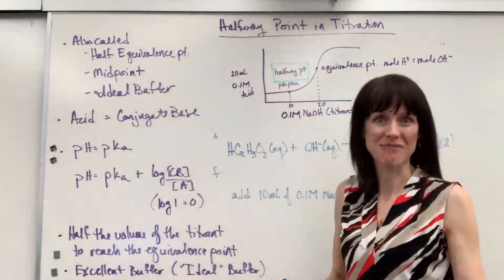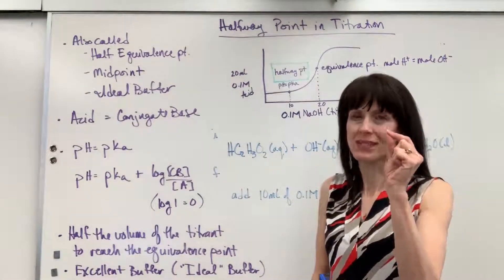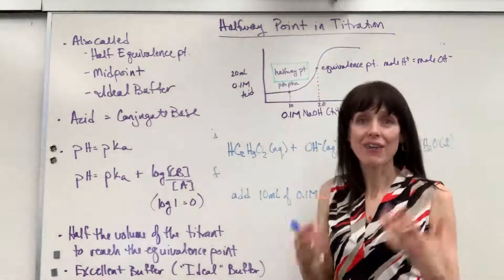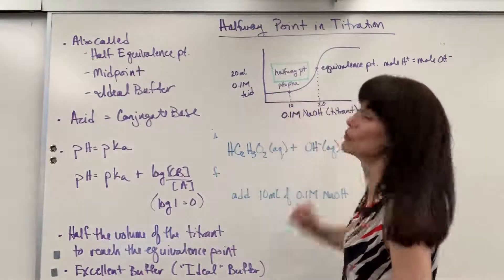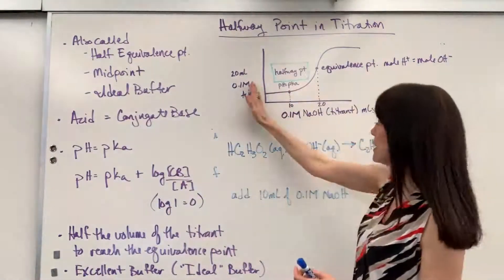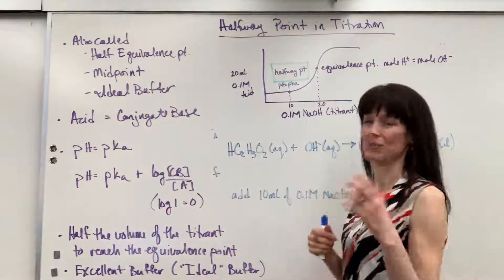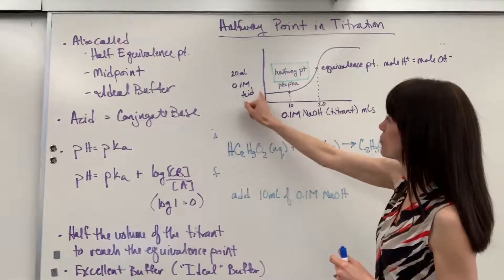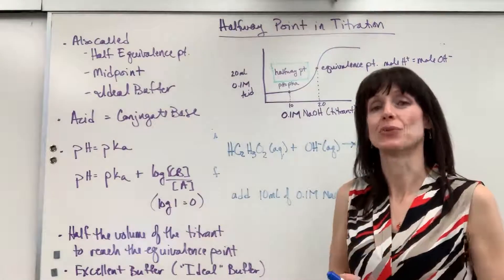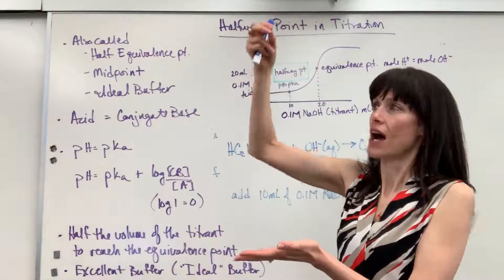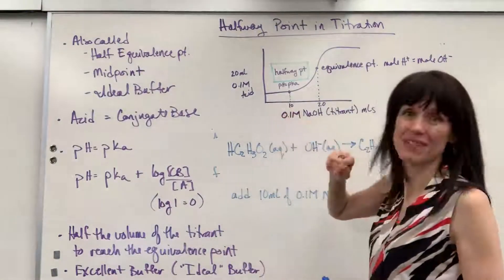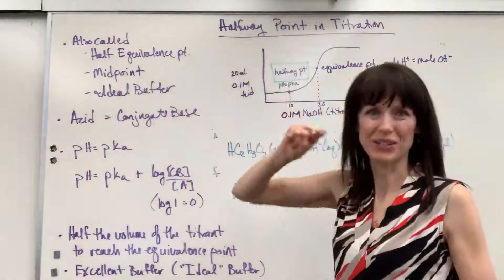The equivalence point is a very special spot where the moles — not molarity, moles — of the acid equal the moles of the hydroxide. That is your equivalence point. The halfway point is when you're halfway from your initial to the equivalence point. That's where you get terms like half-equivalence or midpoint. I know we hit the equivalence point at 20 mils, so the halfway point is going to be 10 mils. Pull that up on the graph — I've labeled it and put it in a green box.